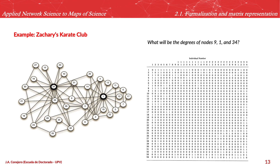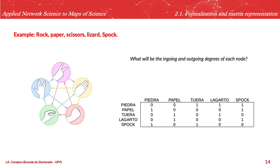From the adjacency matrix, degrees can be read directly. For a non-directed graph, the degree of a node is the sum of all entries in its row or column, since the matrix is symmetric. For a directed graph, outgoing degree is obtained by summing along rows, and incoming degree by summing along columns. That's all for now; we will continue with more information about graphs in the next video.